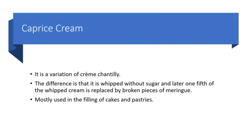Caprice cream is a variation of crème Chantilly. The crème Chantilly is whipped without sugar, and later one-fifth of the whipped cream is replaced by broken pieces of meringue to make caprice cream. This is mostly used in the filling of cakes and pastries.